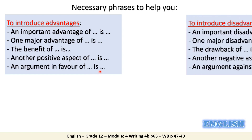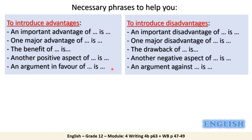The opposite expressions are used to introduce disadvantages: 'An important disadvantage of tourism is...', 'One major disadvantage of tourism is...', 'The drawback of tourism is...', 'Another negative aspect of tourism is...', or 'An argument against tourism is...'